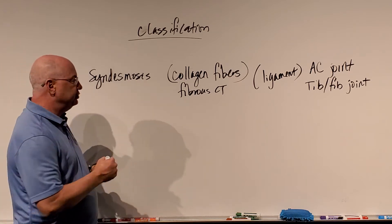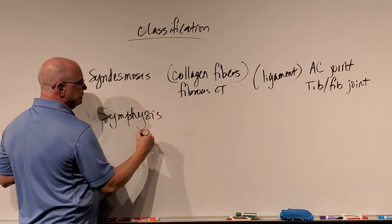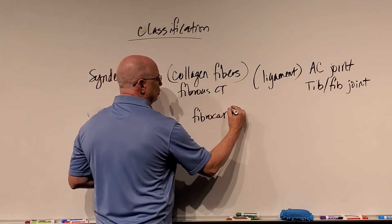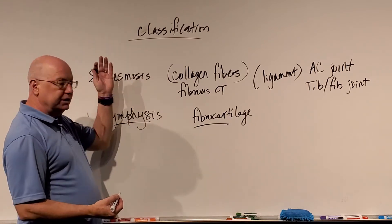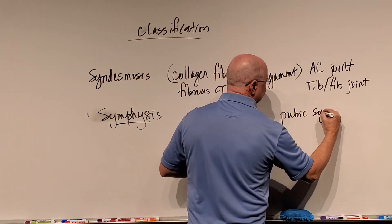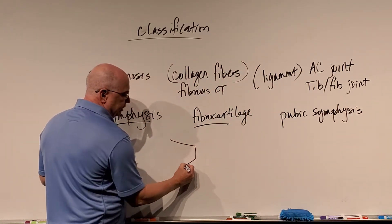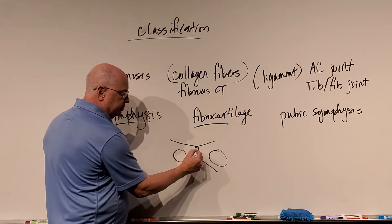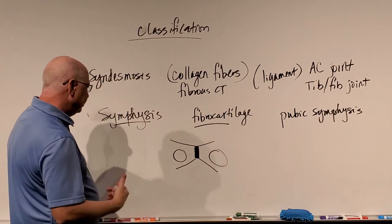The cartilaginous version of an amphiarthrosis is called a symphysis. The key to a symphysis is that it has fibrocartilage holding the joint together. If it's hyaline cartilage it's a synchondrosis; if it's a symphysis, it's fibrocartilage. The best example is the pubic symphysis, where the os coxae come together at the pubic bones. There's some fibrocartilage holding this together, making it a very strong but somewhat flexible joint.